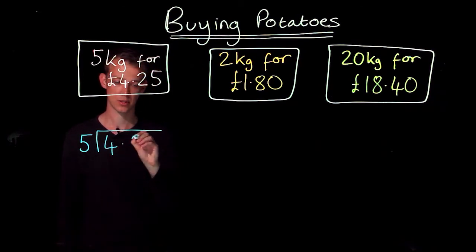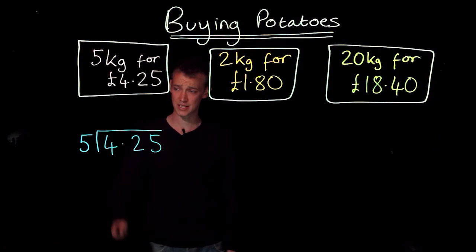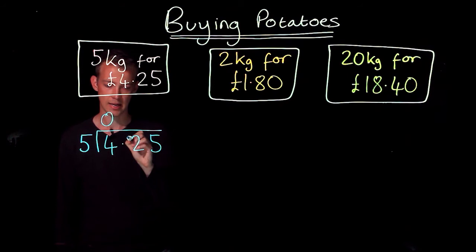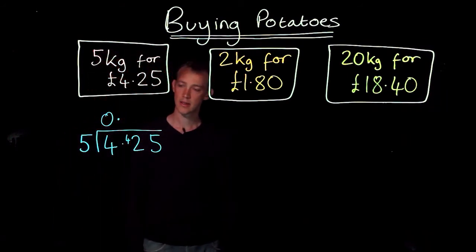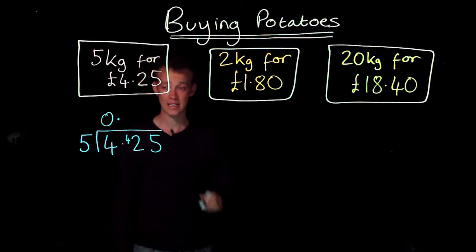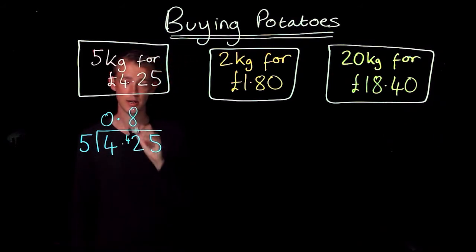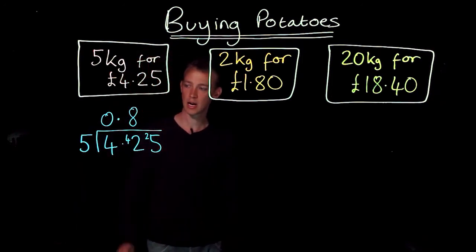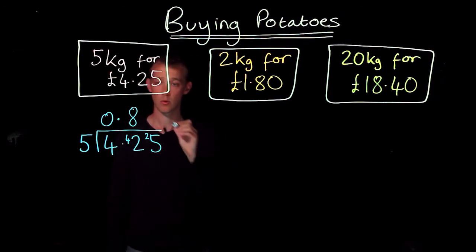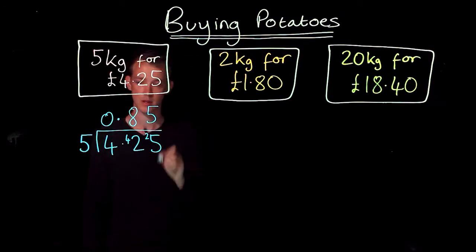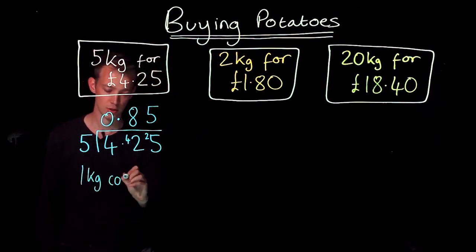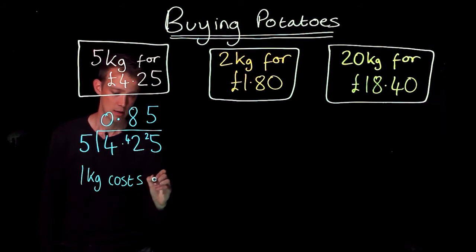Fives into £4.25. First of all, does five go into four? No it doesn't, so I put a zero there and carry the four over. Remember the decimal point goes up here. Fives into 42 goes eight times. Remember there's a remainder, so we put the remainder into the next column. This now becomes fives into 25, which goes five times. So what we've worked out is that one kilogram costs 85 pence.